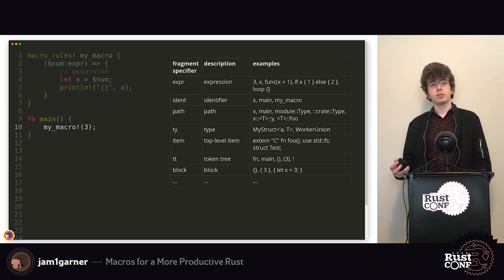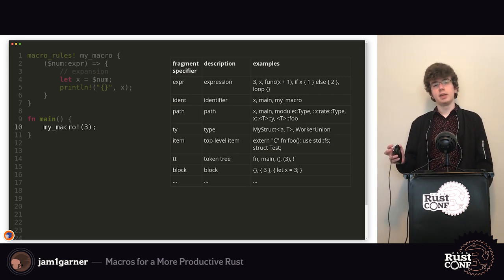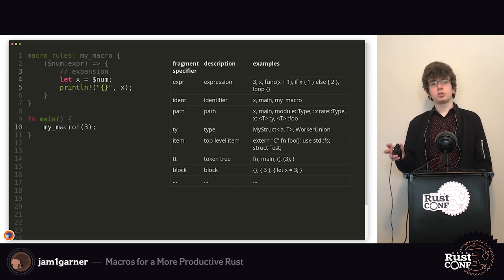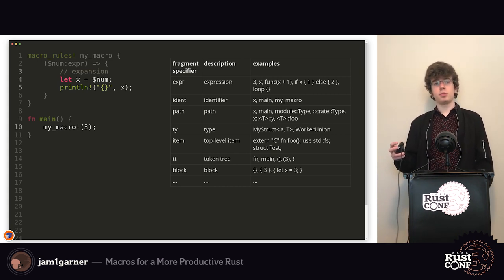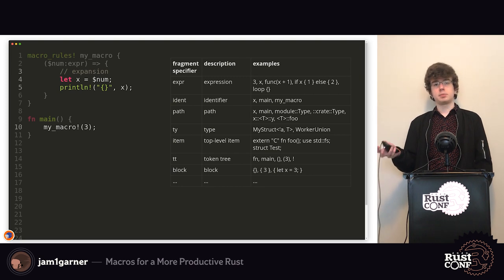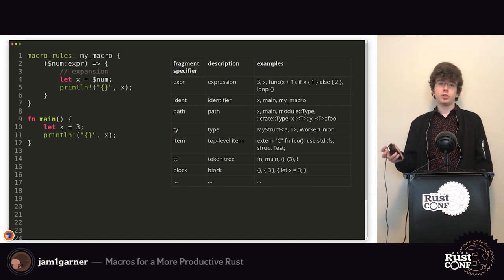Here's an example of calling the macro — in this case just passing in the literal 3, which is a valid expression. If we want to see what it looks like when it expands, we take the expansion and template in the variable we're passing in. In this case it's `num`, prefixed by a dollar sign, and so it expands accordingly.